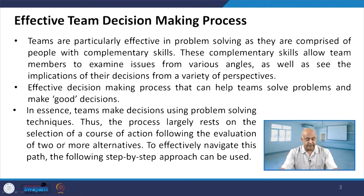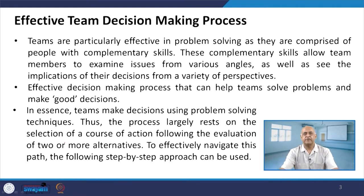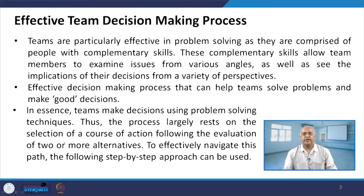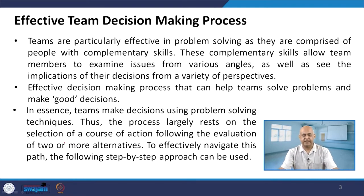These complementary skills allow team members to examine issues from various angles and see the implications of their decisions from a variety of perspectives. Effective decision making is the selection of a course of action following the evaluation of two or more alternatives. Whenever teams take decisions, they go step by step, evaluating the number of options available. Because there are more members, there will be more options, and on the basis of collective wisdom, decisions are taken collectively and step by step.